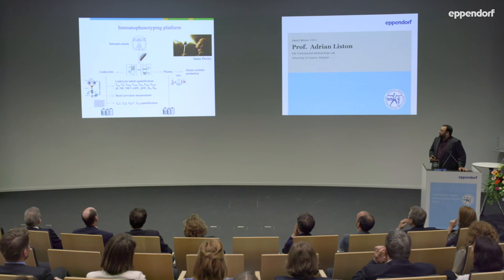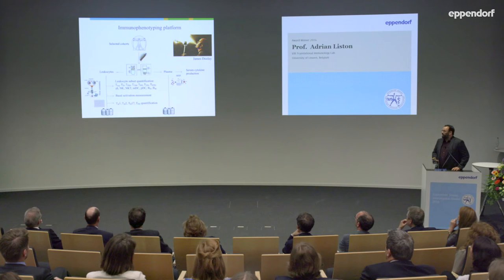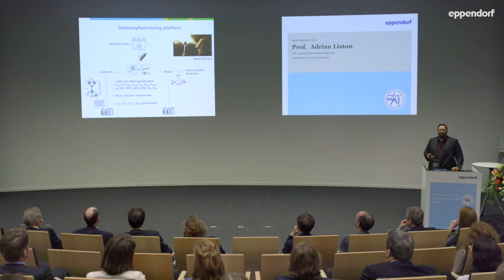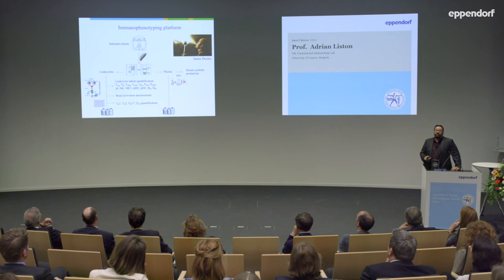We started on this question — a project really spearheaded by James Dooley in the lab. We decided to build a platform with very high detail that we could roll out across hundreds of individuals to try to answer the source of the variation. We tried to do a comprehensive analysis of multiple factors important in the immune system, and we made it robust so the assay performed on one day or a year later would have no technical variation.